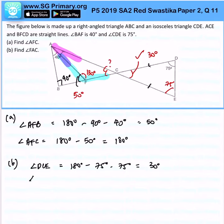Subsequently, I can find angle ACF, because angle ACF will be equal to angle DCE, which is 30 degrees. Therefore, angle FAC would simply be 180 degrees, minus 130, minus 30 degrees, all in all, it would be 20 degrees.